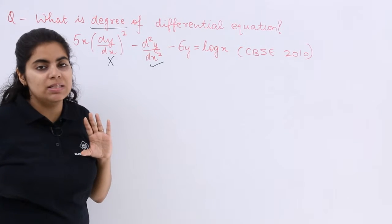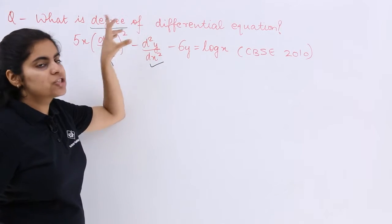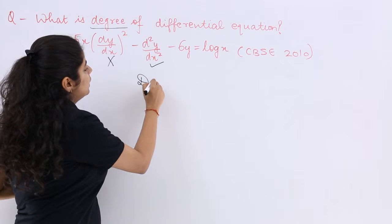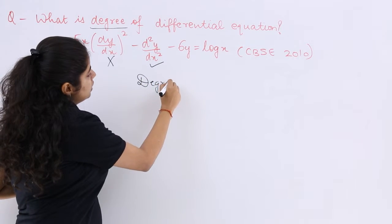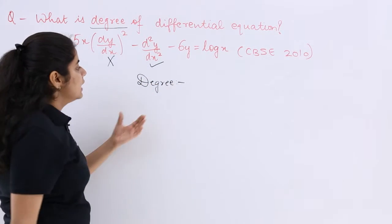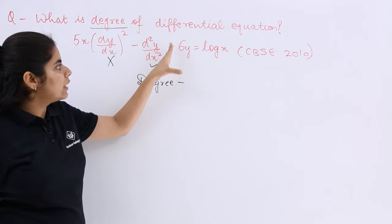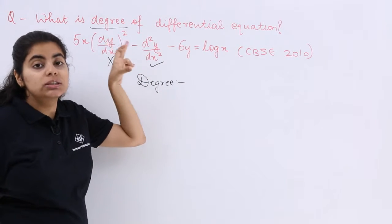I hope this makes sense, but what was the question? The question was not about order but about the degree. So what should be the degree? The degree should be the power raised to this highest order term.